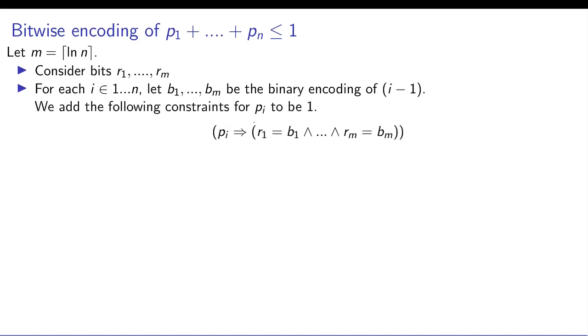Then what do you do? You say that if pi is equal to 1 then your fresh variables r1 to rm should exactly equal that encoding. And then you just add this constraint for each i. So now if pi-th bit becomes true then r1 to rm has to take a specific value, and if let's say pi plus 2 becomes true, then one of them has to take a different value and that will not work. So that's how you can encode less than equal to 1.